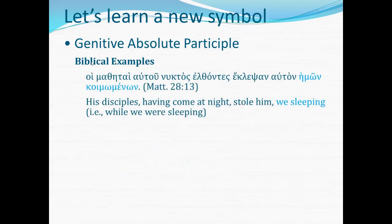Here's another one. This is the Jewish leaders' instructions to the Roman soldiers about the story to tell about Jesus' resurrection — there to say, 'His disciples, having come at night, stole him, we sleeping,' which means while we were sleeping. Can you envision the diagram again? 'His disciples stole him' will be the main clause. A simple participle phrase, 'having come at night' — elthontes is going to be a participle agreeing with disciples, masculine nominative plural. So we have both a simple participle and a genitive absolute.